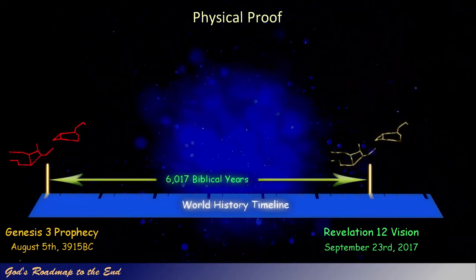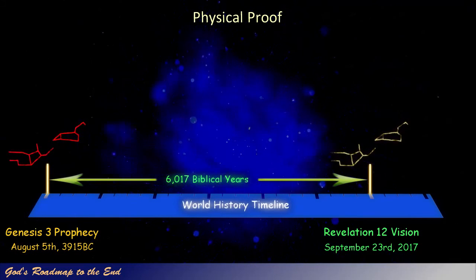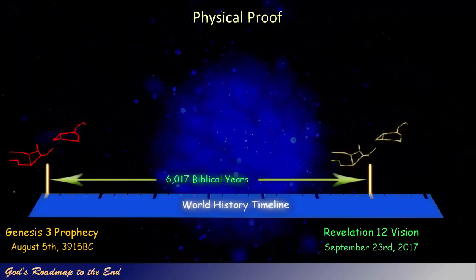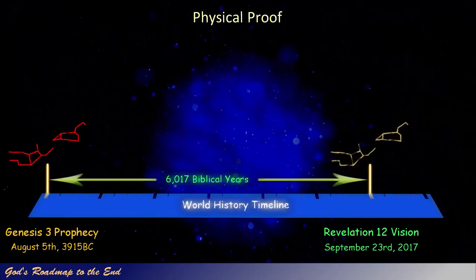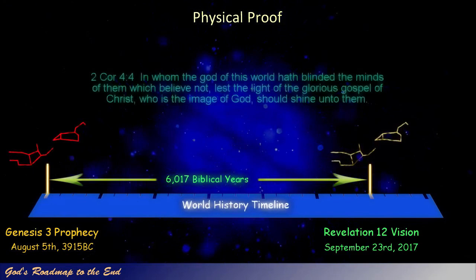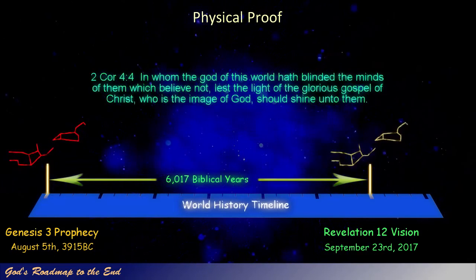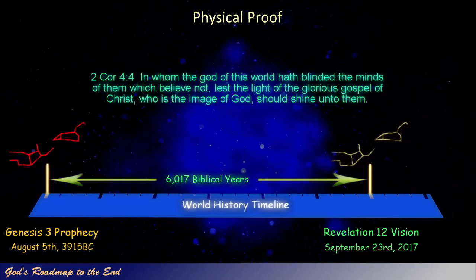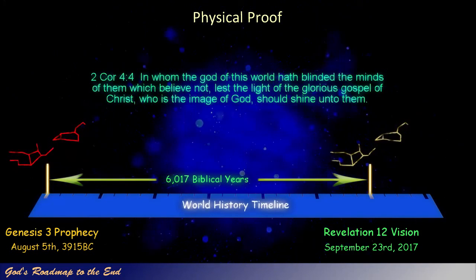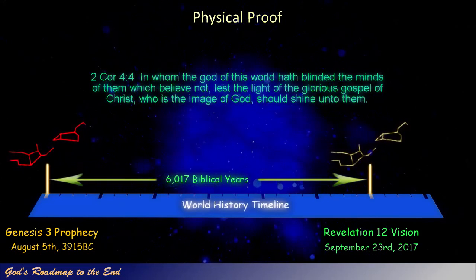Before this point there was no death, according to God's word. At this point Satan also gained control over the world and became the God of this world, as described in 2 Corinthians 4. 2 Corinthians 4 verse 4: 'In whom the God of this world hath blinded the minds of them which believe not, lest the light of the glorious gospel of Christ, who is the image of God, should shine unto them.'